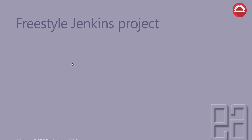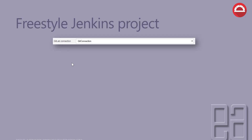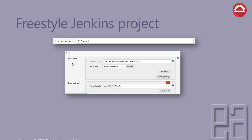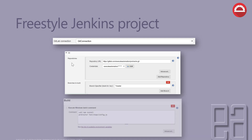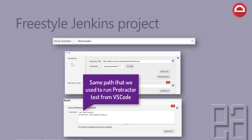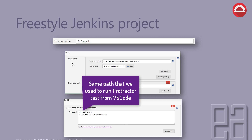The freestyle Jenkins project we're going to create will use the git connection we just configured, connected to the git source control plugin. The repository URL is gitlab.com/exitautomation/protractor.git, and the credentials are the same ones used to log into the GitLab account. We also need to pass a build command — since we're on Windows, I'll use the Windows batch command. The command is 'call npm install' followed by the protractor command with the path to our config file.